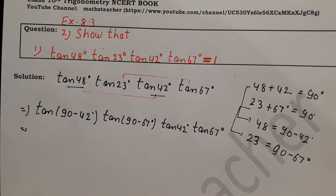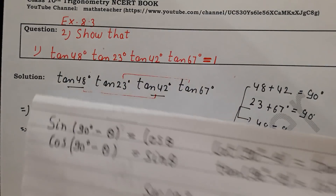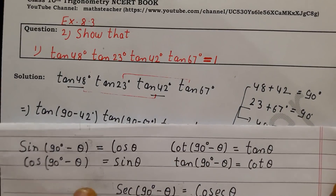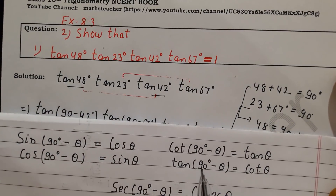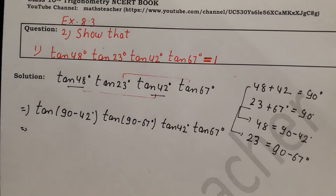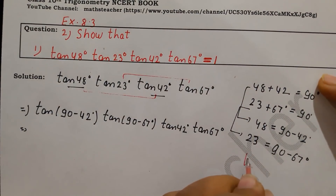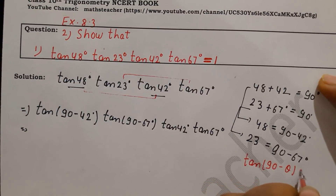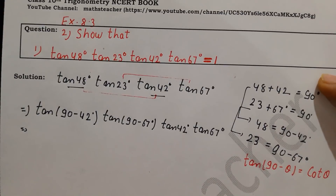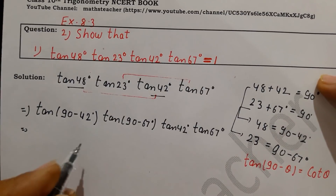Now we have to apply the complementary angle identity. We use the trigonometric ratio for complementary angles. What is tan(90 minus θ)? It equals cot θ. So here we apply: tan(90 minus 42°) becomes cot 42°, and tan(90 minus 67°) also becomes cot 67°.